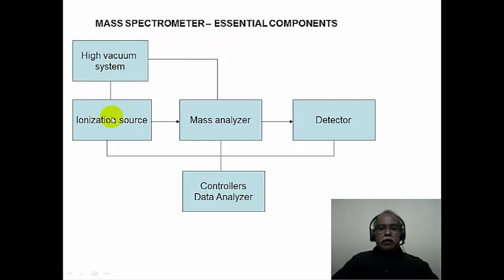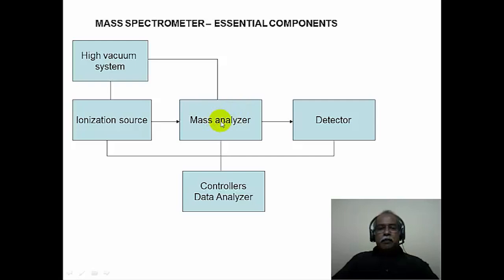The second component is an ionization source. Depending on the type of mass spectrometry technique, different ionization sources are used to generate ions. The ions generated are fed into the mass analyzer, which separates ions of different masses based on their mass-to-charge ratio, expressed as m/z. The separated ions are then fed into the detector, which produces a signal recorded as a mass spectrum. The entire system is controlled by computers and microprocessors, which form the data analyzer component of the mass spectrometer.